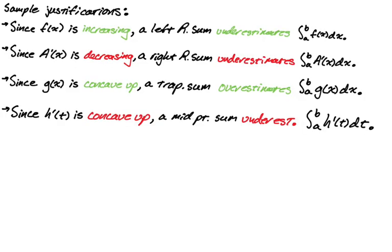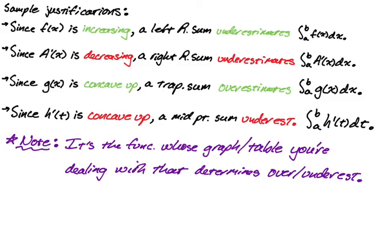Just so you can see some sample justifications — you're probably going to have to do this on a multiple choice question or a free response question on the AP exam. I have four different examples: one for a left sum, right sum, trapezoidal sum, and a midpoint sum, just to give you an idea of what you can write. The most important thing: draw stuff. You don't have to keep this all in your brain — you can actually work it out. For midpoint, figure out what the trapezoid is doing and it's the opposite. The thing to really keep in mind is that it's the function whose graph or table you're dealing with that determines if you have an over or underestimate.